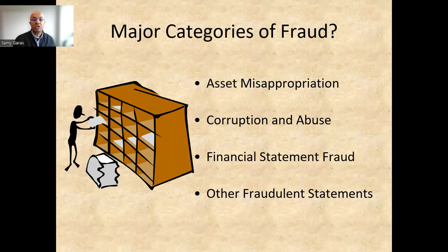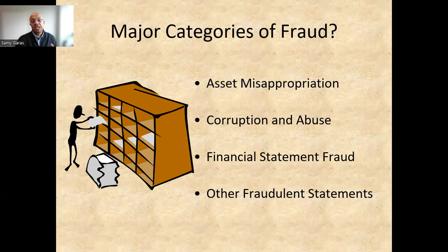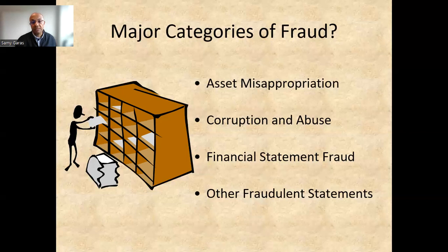What are the major sections of fraud? It could be actual stealing of assets, which we call asset misappropriation, like stealing inventory items or stealing cash. Or it could be corruption and abuse, where an employee might use his authority as a manager to get a bribe from a supplier for a bidding contract, or from customers for better advantage — we call this corruption. Financial statement fraud is trying to manipulate the numbers to make the financial statements look good for investors. And finally, there are other fraudulent statements a person can commit, but in this chapter we will focus mainly on financial information fraud.